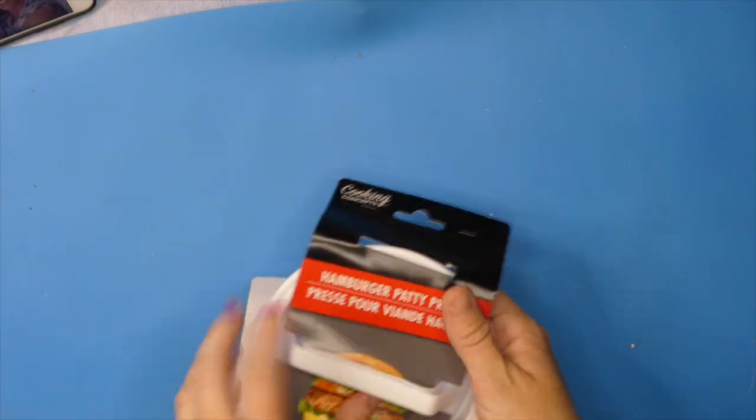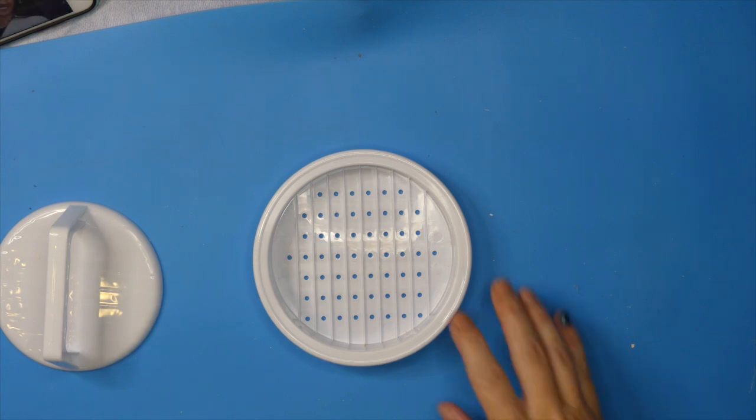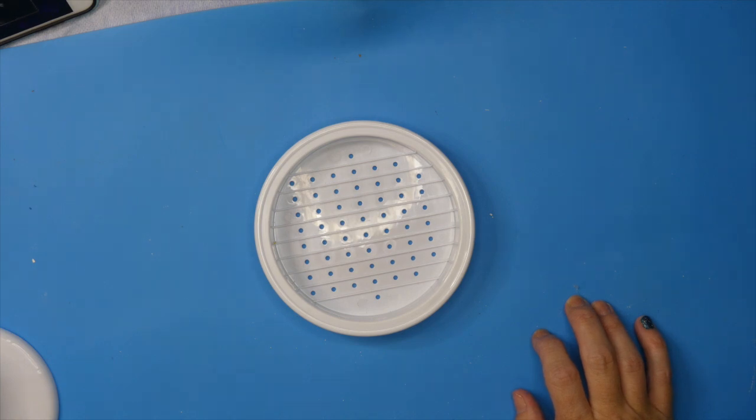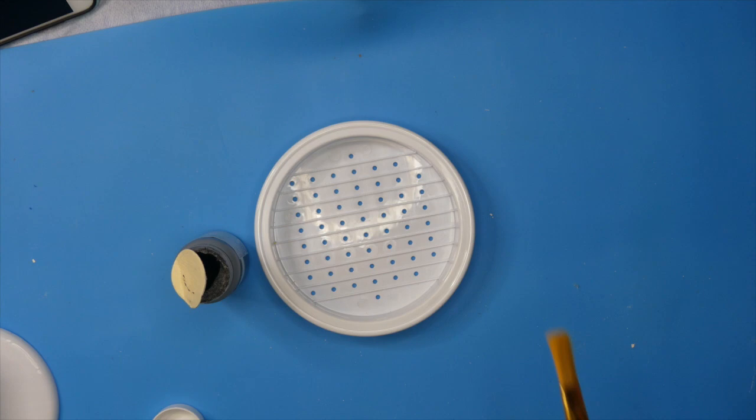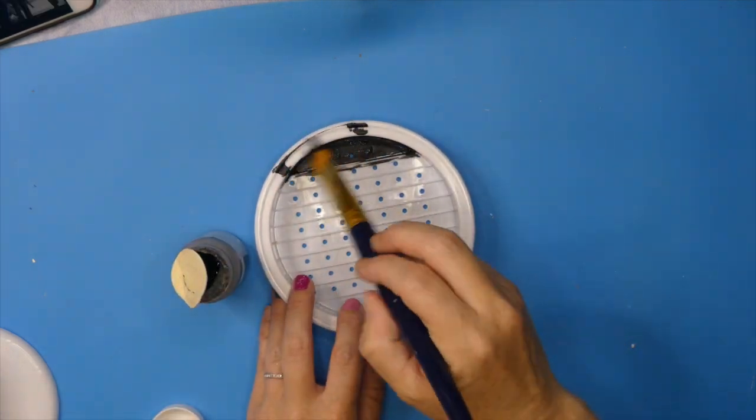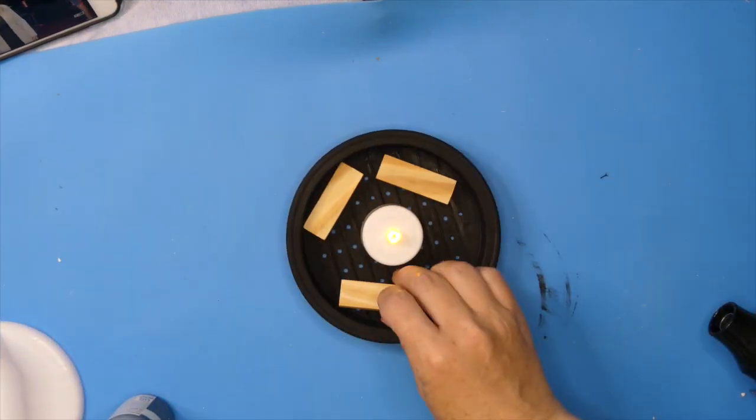I took this hamburger patty press that I got from Dollar Tree and just used the bottom part. I painted it black using my Waverly chalk paint and ink, giving it one, maybe one and a half coats to cover the entire thing.